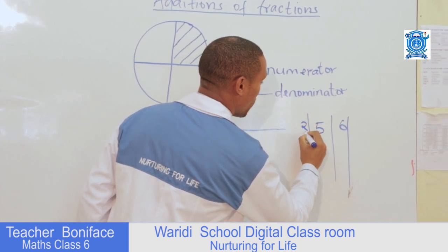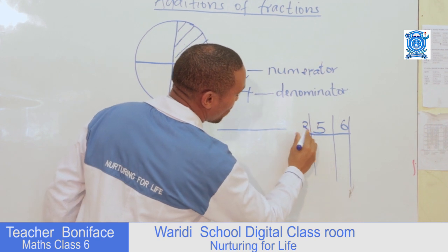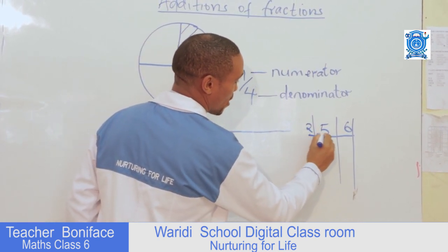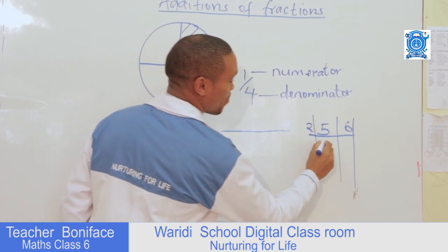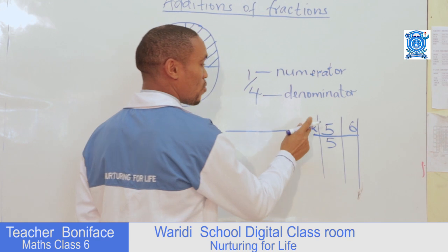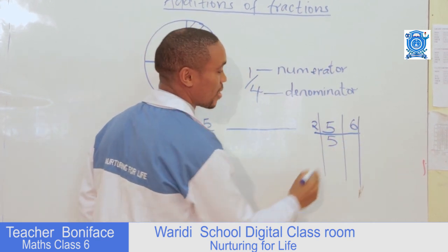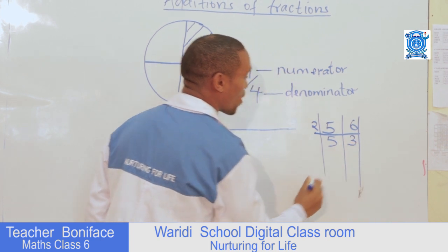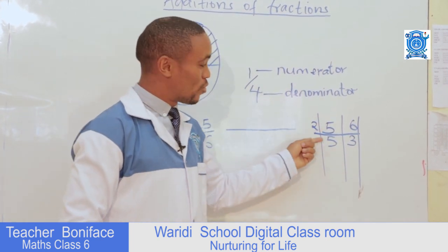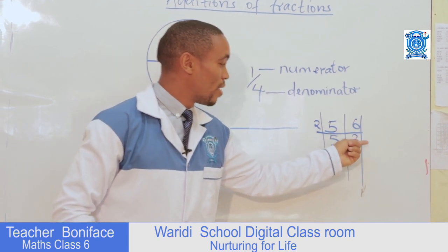We'll start by dividing with the first number, which will be two — that is the least number we can use. How many times does two go into five? It's impossible, so it remains five. How many times does two go into six? We need to multiply two by three to get six, so that's three. We can't continue with two anymore because two can neither go into five nor into three evenly.